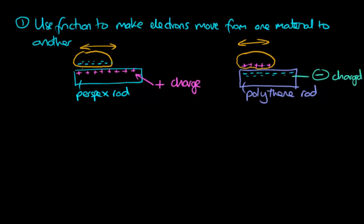So these are insulators. So the electrons cannot move freely. They can only move to a limited amount to the surface really of the materials.